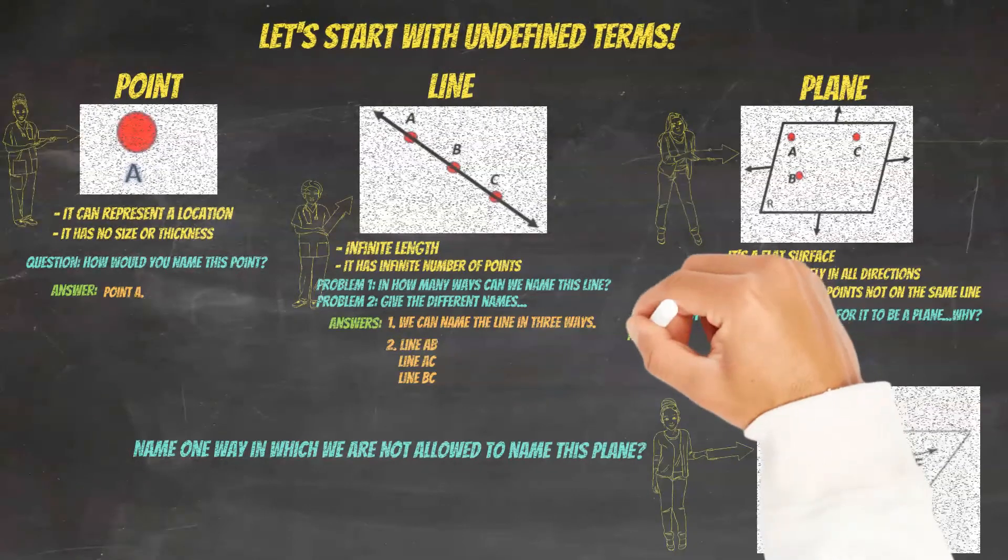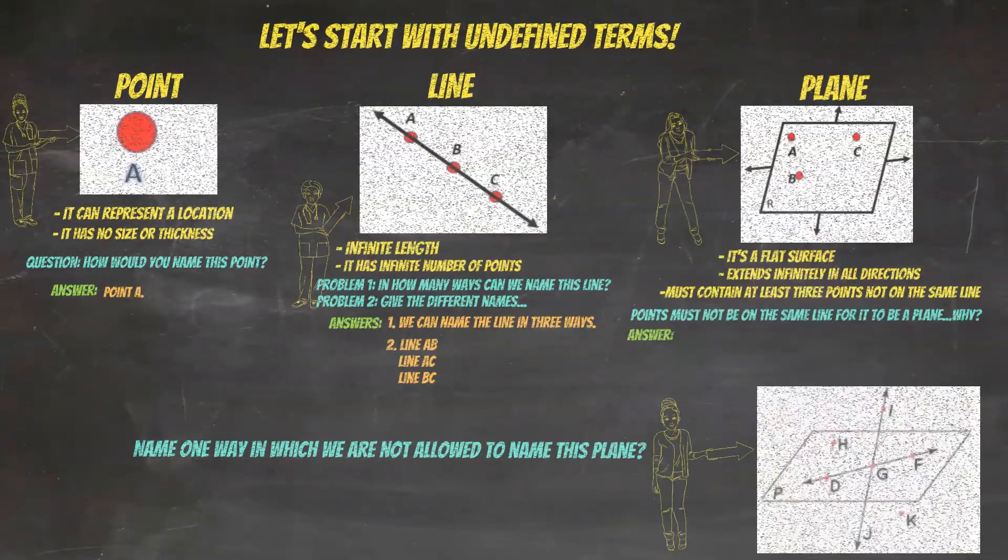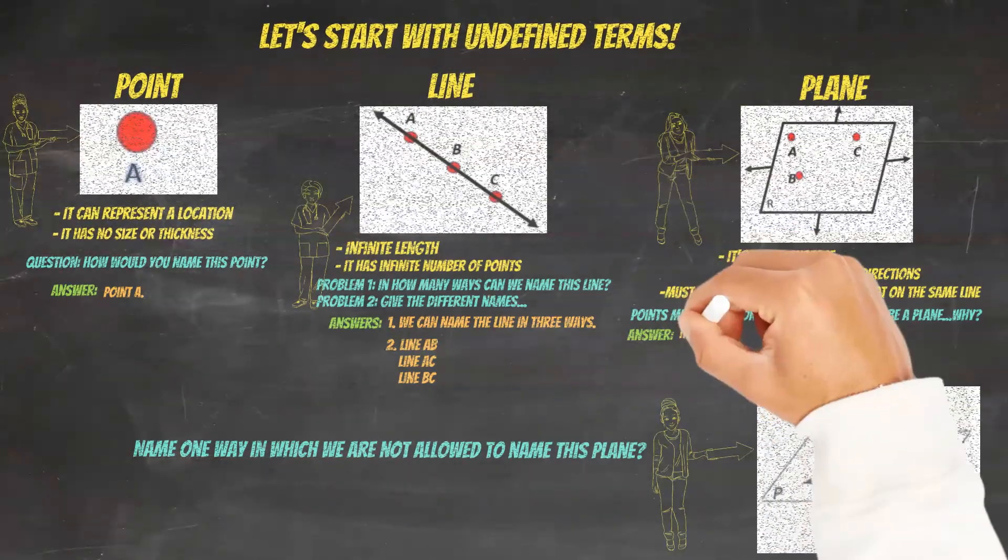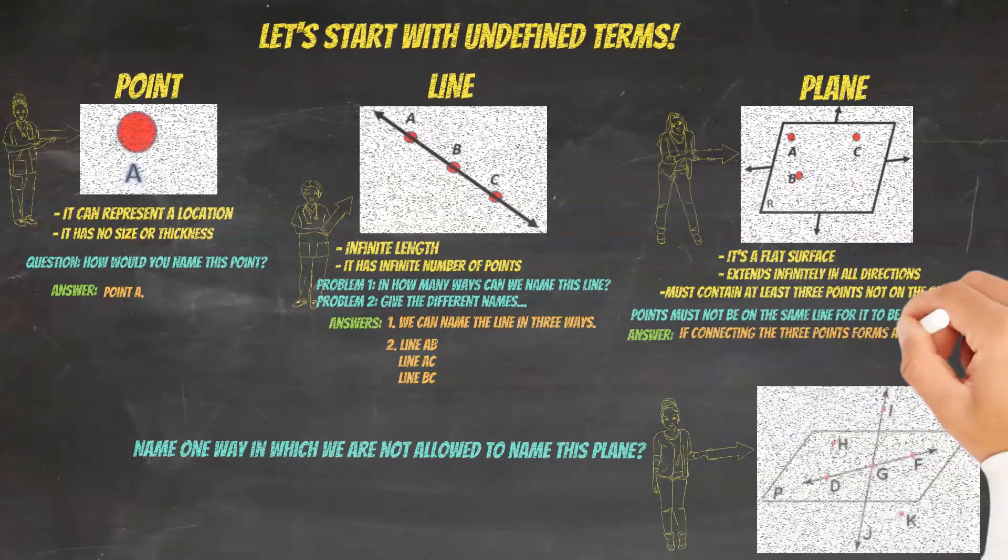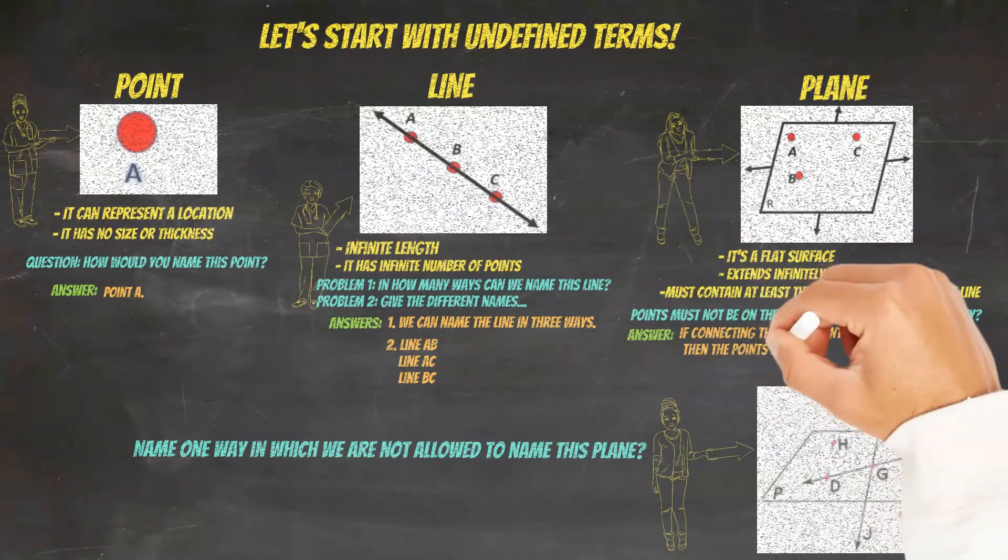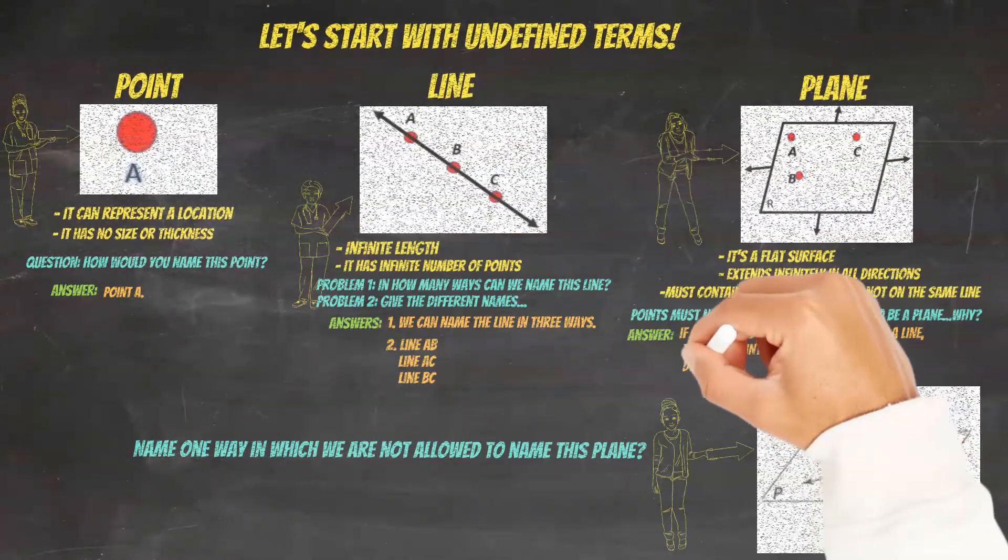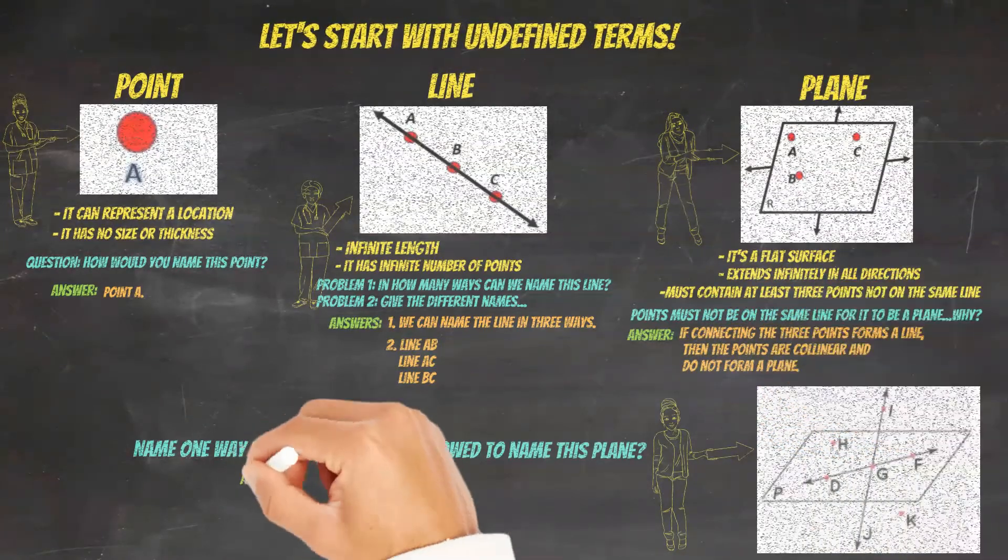Next is a question on plane. The answer for this one is, if the points are on the same line, then these points are collinear, which is a term I have not introduced. So they do not form a plane. But I'll explain collinear points on another video.